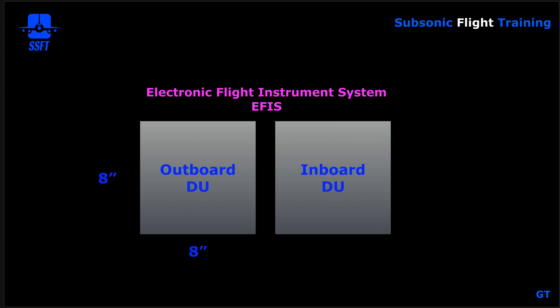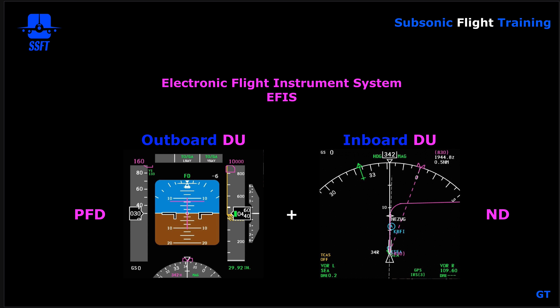There is an outboard display unit or DU and there is an inboard display unit or DU. These two display units for the captain and the two display units for the first officer comprise the electronic flight instrument system. The PFD is normally on the outboard display unit and the ND, or navigation display, is normally on the inboard display unit.